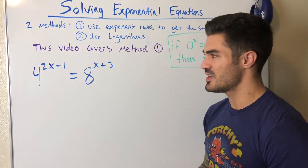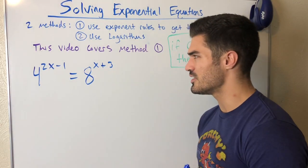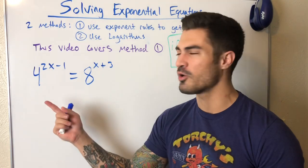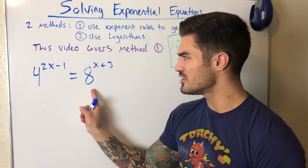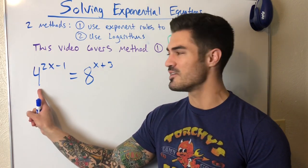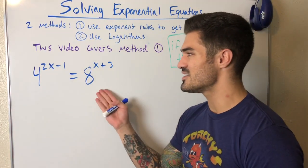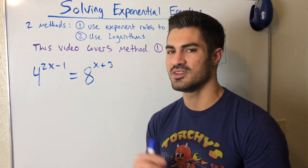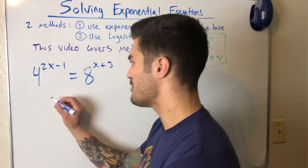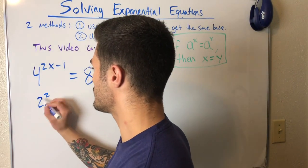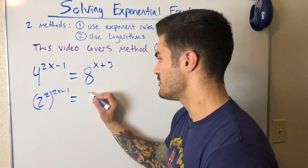So we need to do some manipulation to make these bases the same using our exponent rules. I can rewrite eight as two cubed and I can rewrite four as two squared. And then I have the same base. That's the pattern you're going to notice, you're going to see bases in common usually between these numbers. You can rewrite these as that common base to some power. That's pretty much how all these problems work.